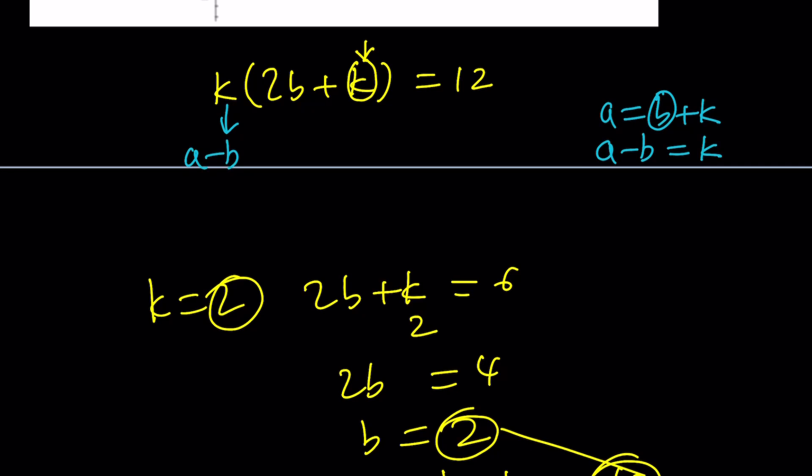What about 2b + k? 2b + k can be written as b + b + k. But b + k is the same as a, so we can replace it with a, and that gives us b + a or a + b.